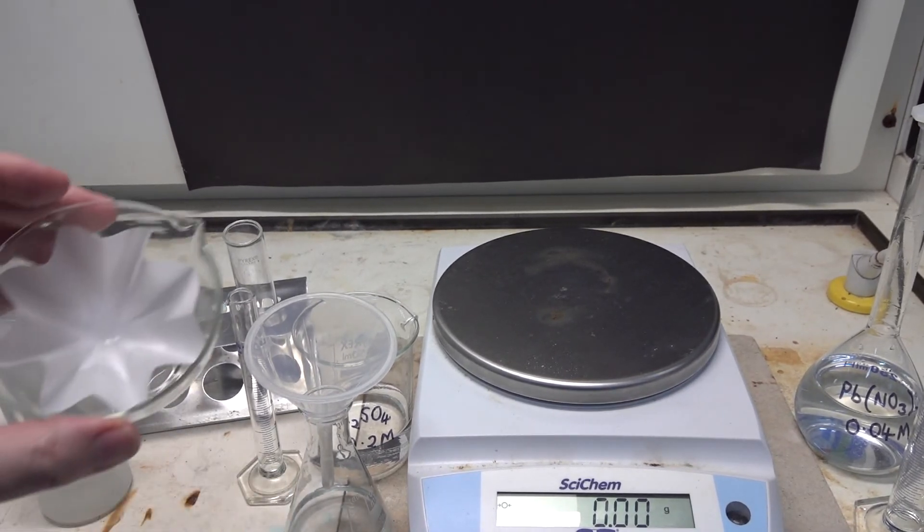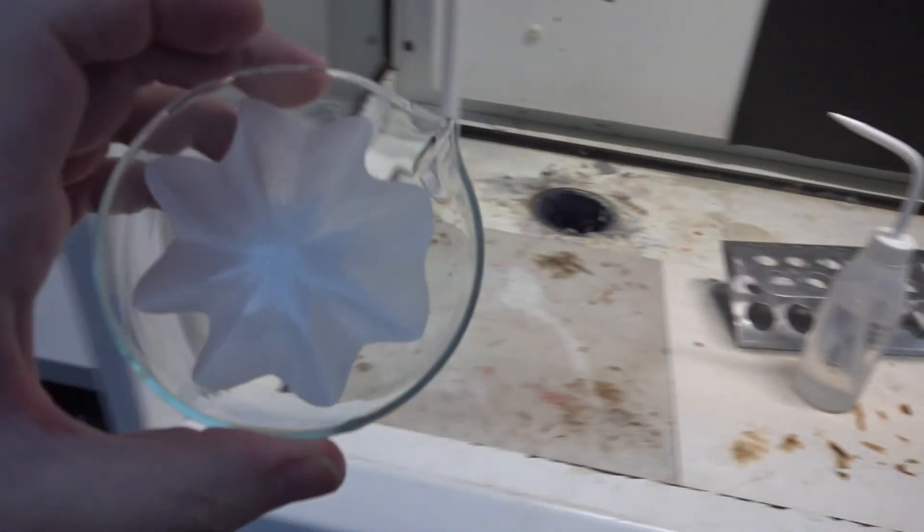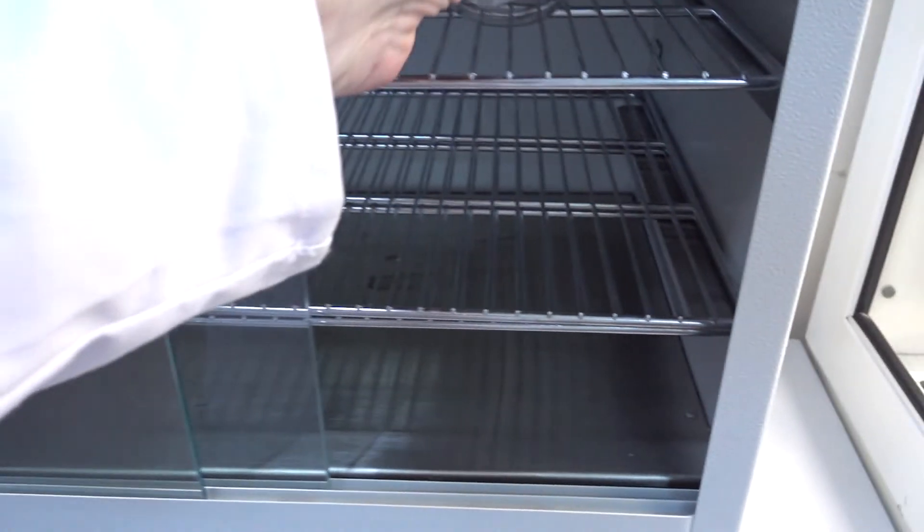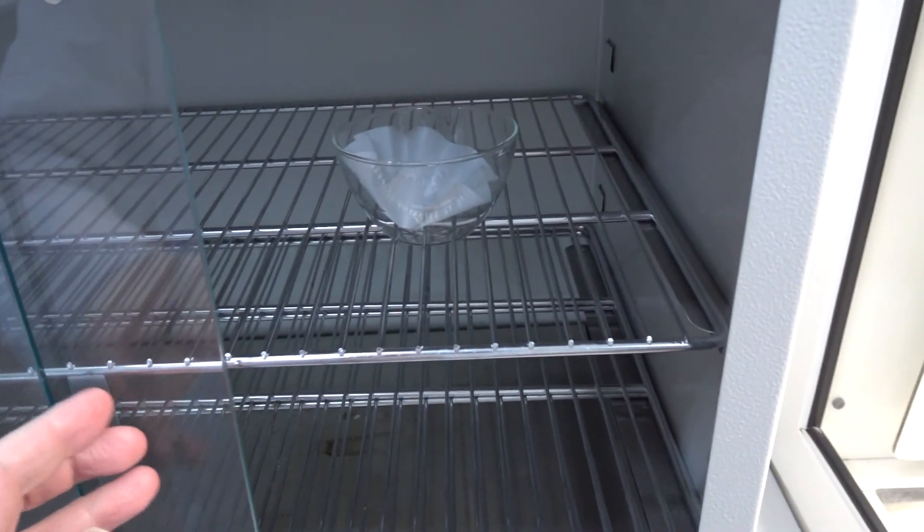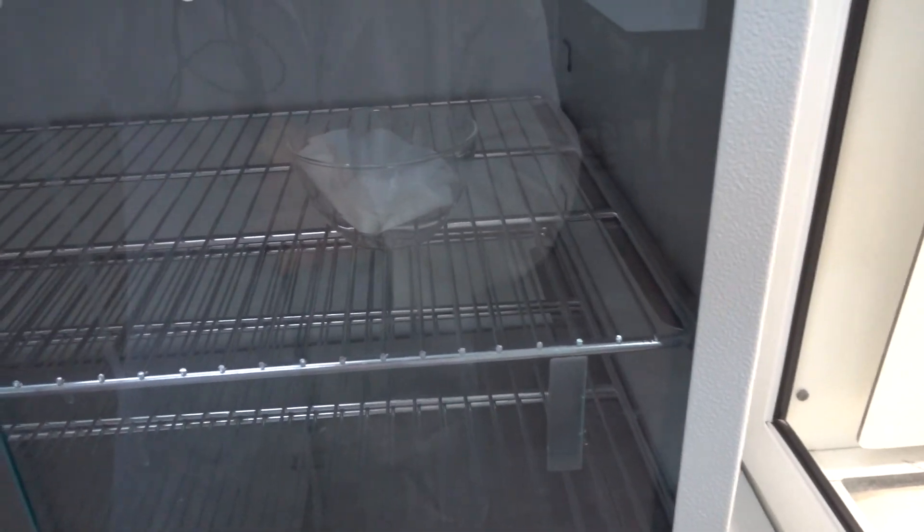Well, let's transfer the precipitate to the drying cabinet, which is over here. So in it goes on the top shelf, and we leave it to dry completely.